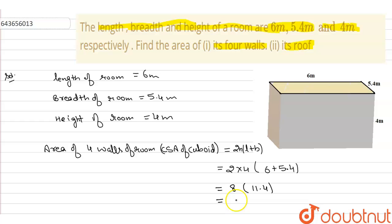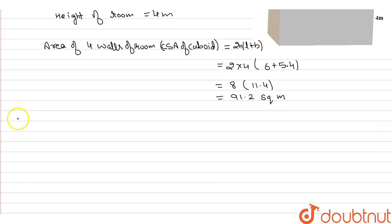After solving this, we get 91.2 square meter as area of its four walls. In second part, we want to find area of its roof.